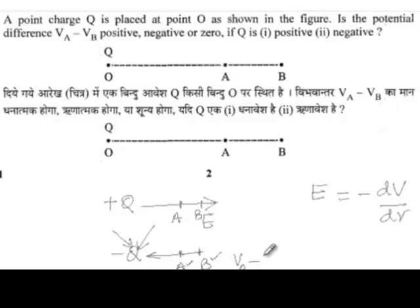VA minus VB is negative in this case. And in the first case, VA minus VB was positive.